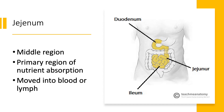The middle section of the small intestine is the jejunum. While the majority of digestion occurred within the duodenum, the majority of absorption of nutrients occurs within the jejunum. This is where nutrients are absorbed from the small intestine and moved into the blood or lymph.